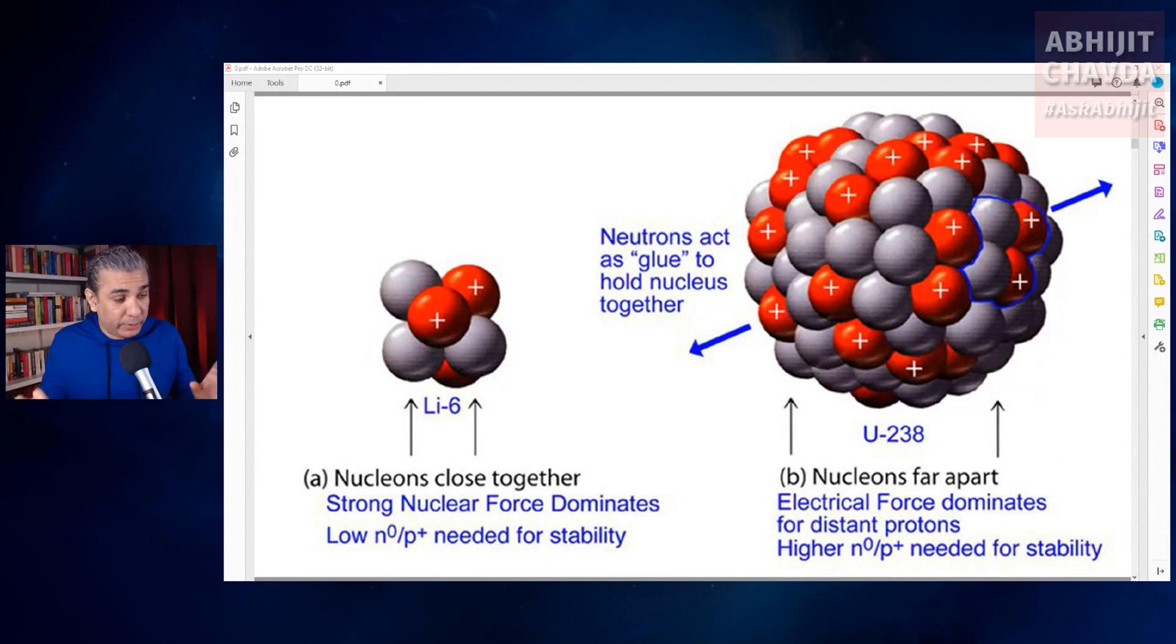So even though the protons are positively charged, they repel each other, still the neutrons combine inside the nucleus and act as a nuclear glue. And that's how the nucleus is held together.